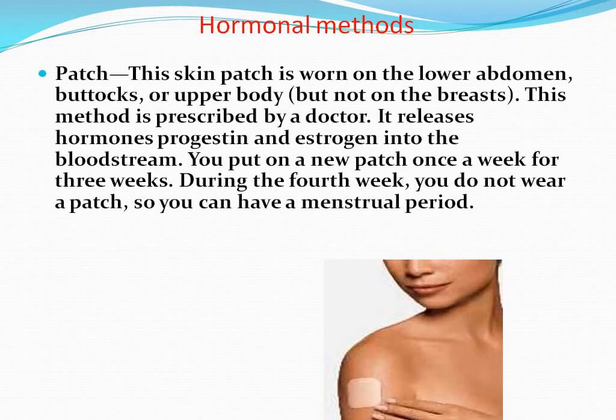Hormonal methods: Patch. This skin patch is worn on the lower abdomen, buttocks, or upper body but not on the breast. This method is prescribed by a doctor. It releases the hormones progesterone and estrogen into the bloodstream. You put on a new patch once a week for 3 weeks. During the fourth week, you do not wear a patch so you can have a menstrual period.